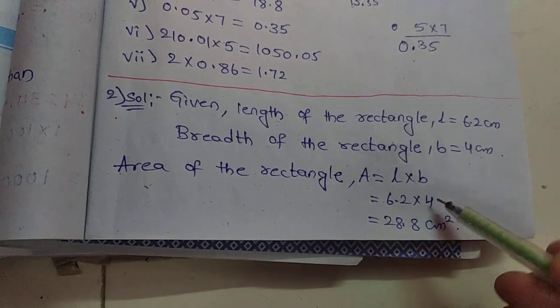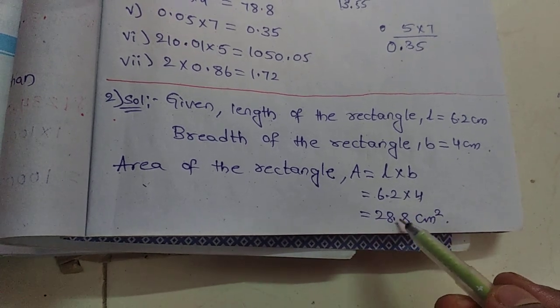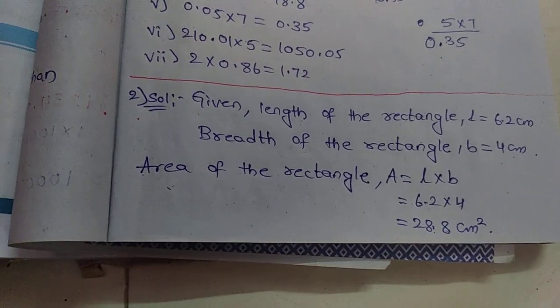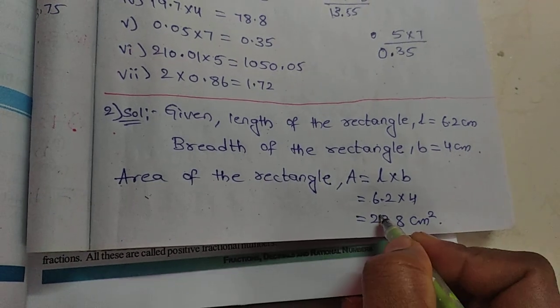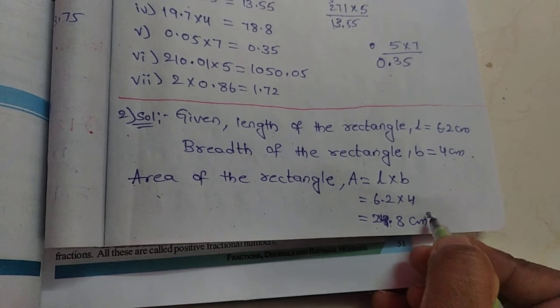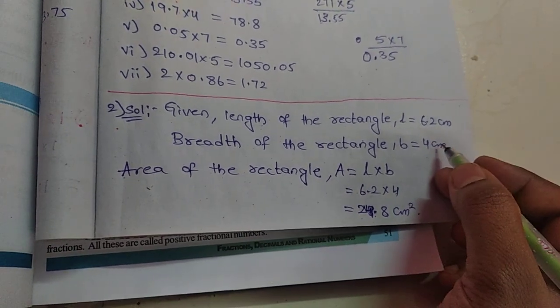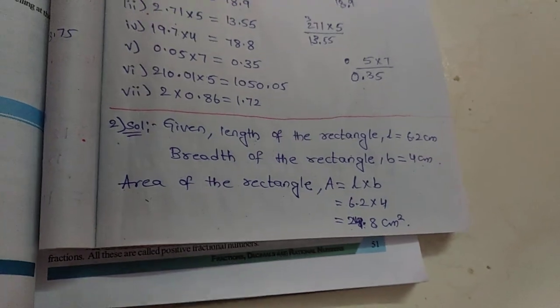So 6.2 into 4. Here we multiply: 4 times 2 is 8, and 4 times 6 is 24. So we get 24.8. By mistake I wrote 28, sorry. 24.8 centimeter square. The unit is area, so centimeter multiplied 2 times becomes centimeter square.